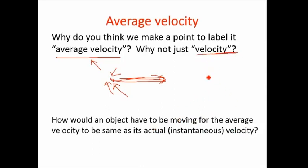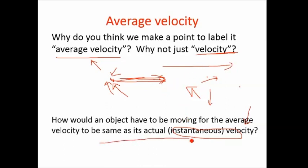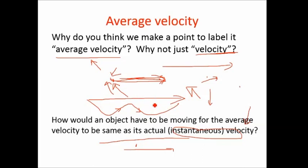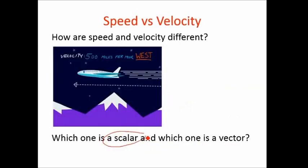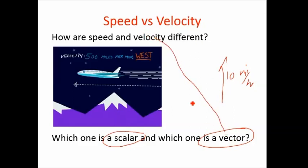Instantaneous velocity is exactly what the object is doing at one moment in time — is it moving that way, or that way? Average velocity is over a distance. For average velocity to equal instantaneous velocity, the object has to be traveling in a straight line. Speed is a scalar — just a number like miles per hour. Velocity is a vector — like 10 miles per hour north. So velocity is the vector and speed is the scalar.